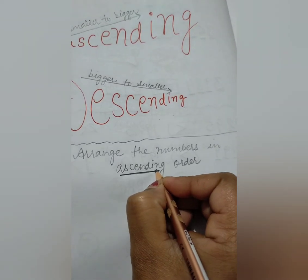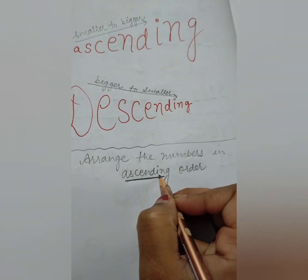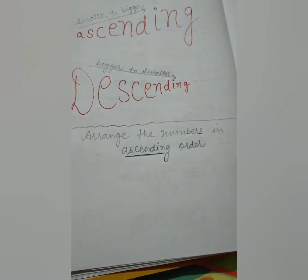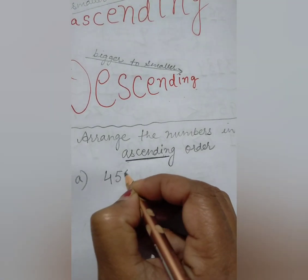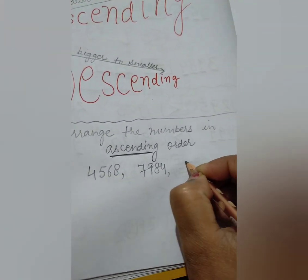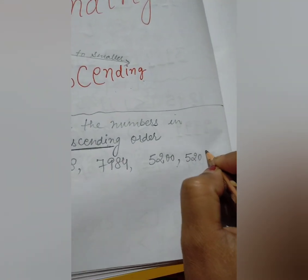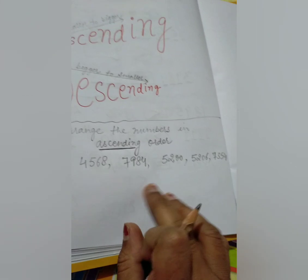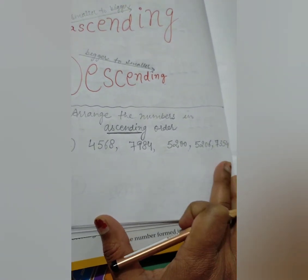Ascending order means we have to start with the smaller number and move towards the bigger numbers. For example, the numbers are: 4568, 7984, 5200, 5206, and 7354. We can see 5 numbers are given and we have to arrange these numbers in ascending order.